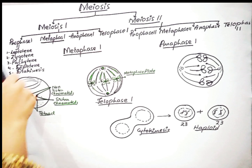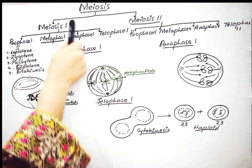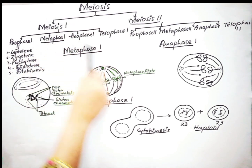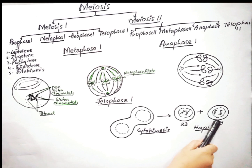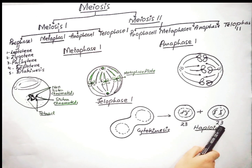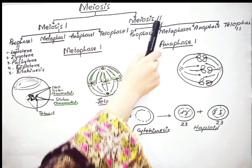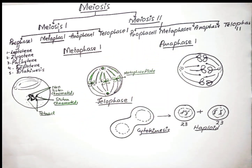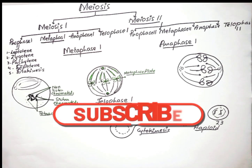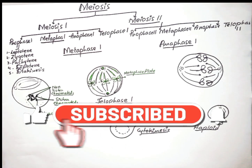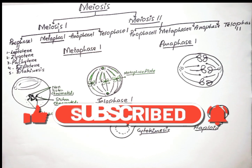This is all about the stages of meiosis 1. After meiosis 1, we get two daughter cells which contain the haploid number of chromosomes. In the next lecture, we will go through meiosis 2 and its sub-stages. I hope you understood this lecture. Don't forget to subscribe to my channel, Learn Science With Me. Like this video, share it with your friends. Thank you.